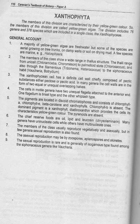The members of this division are characterized by their yellow-green color. The members of this division are called yellow-green algae. The division includes 76 genera and 376 species, which are included in a single class, Xanthophyceae.